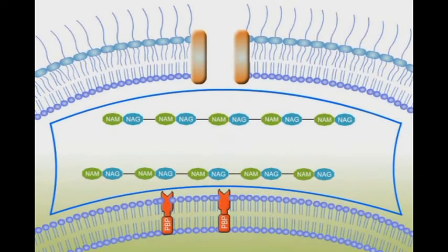Peptidoglycans are composed of chains of amino sugars such as NAMs or NAGs that are cross-linked together by short amino acid chains such as alanine and glutamic acids. These amino acids are cross-linked together by the transpeptidase enzyme.